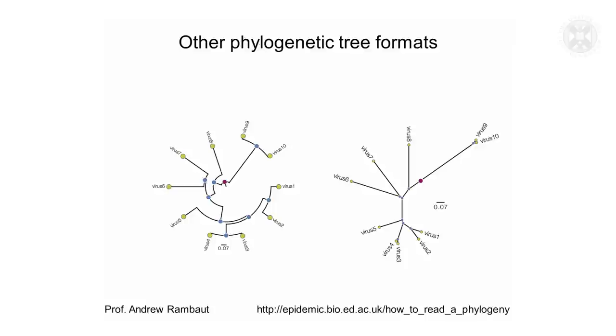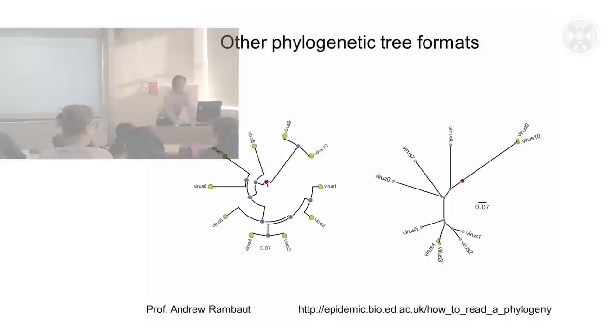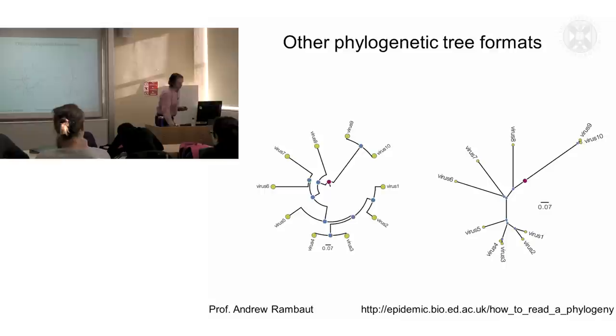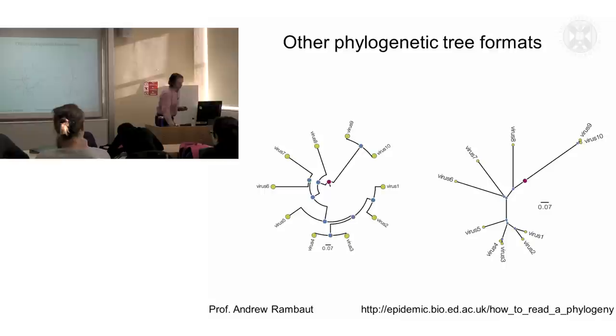And what I've shown you is kind of a standard rectangular format of the trees. You can get other formats. This is exactly the same set of sequences. So these are other different formats of phylogenetic trees. And I'll point you to this website, which my colleague, Professor Andrew Rambaut, who's based at the King's Buildings, has put together, which very nicely goes through how to interpret a phylogenetic tree.